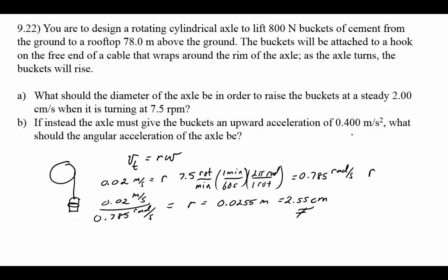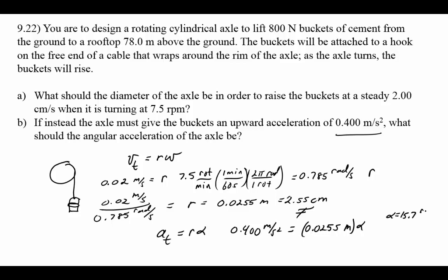For an upward acceleration of 0.4 meters per second squared, using a tangential equals r alpha: 0.400 meters per second squared equals 0.0255 meters times alpha. Solving, alpha equals 15.7 radians per second squared.